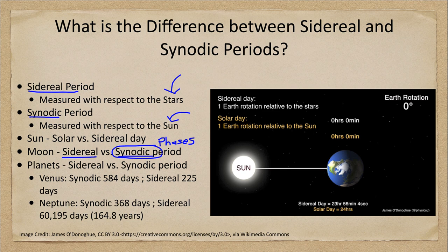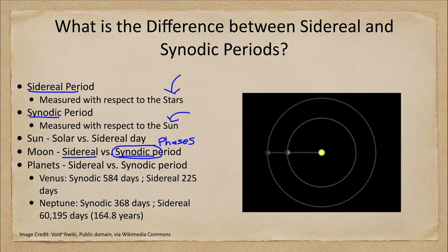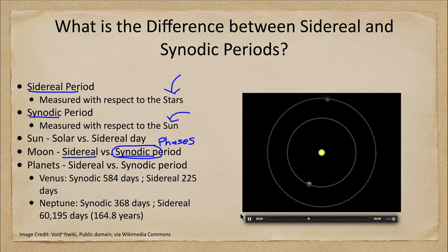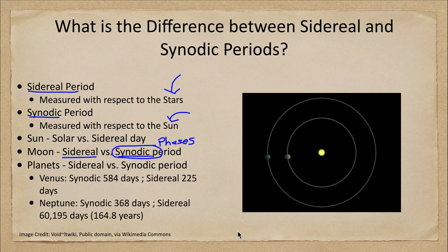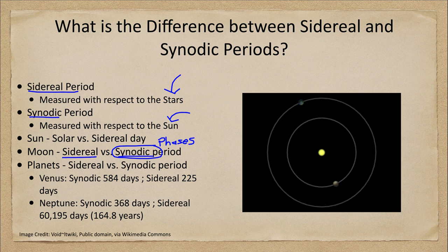Now we can also look at this for planets. Here we have two planets and the sun shown. We see how these work as we watch the orbits go around, and we will see that they line up again after a certain amount of time. But that is not how long it takes the planet to go around the sun — that is getting them back into the same orientation, because they are both moving at different rates around the sun.